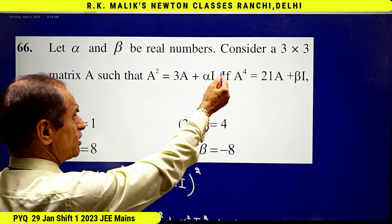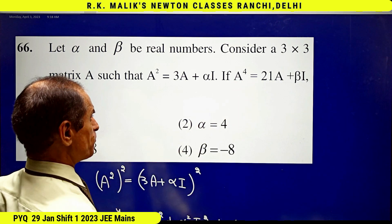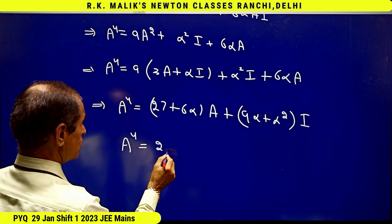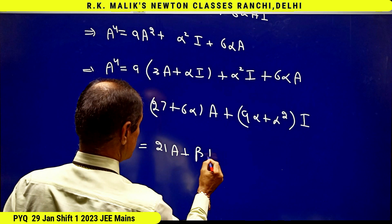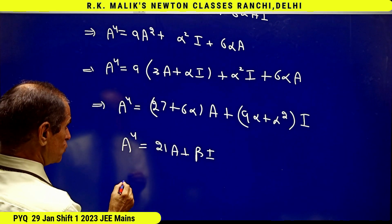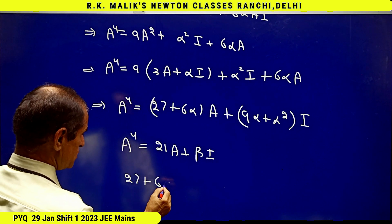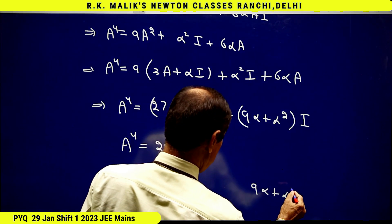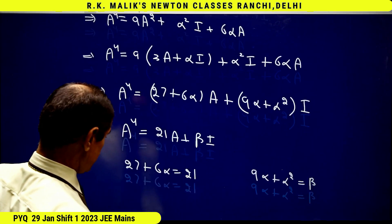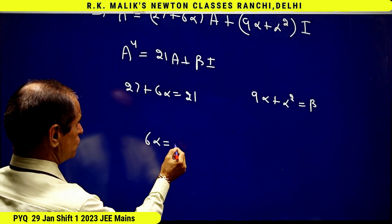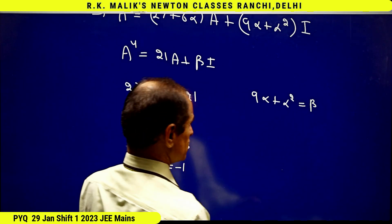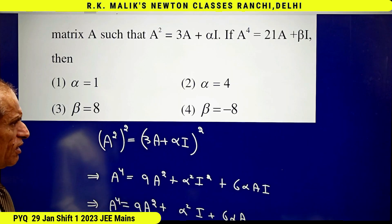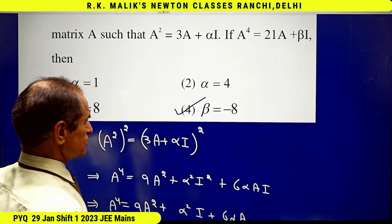Since it is given that A to the power 4 equals 21A plus beta I, I compare the two expressions. Comparing coefficients of A: 27 plus 6 alpha equals 21, so 6 alpha equals minus 6, giving alpha equals minus 1. Comparing coefficients of I: 9 alpha plus alpha squared equals beta, which gives beta equals minus 8. Hence the fourth choice is the correct choice.